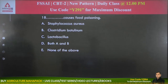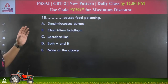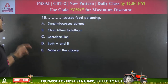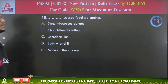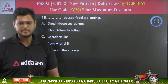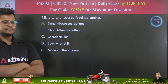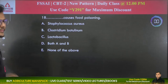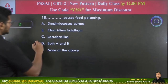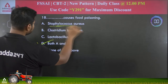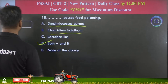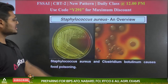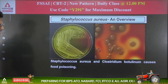Question 18: What causes food poisoning — Staphylococcus aureus, Clostridium botulinum, Lactobacillus, or both A and B? The answer is both A and B — Staphylococcus aureus and Clostridium botulinum both cause food poisoning. Lactobacillus obviously does not cause food poisoning.